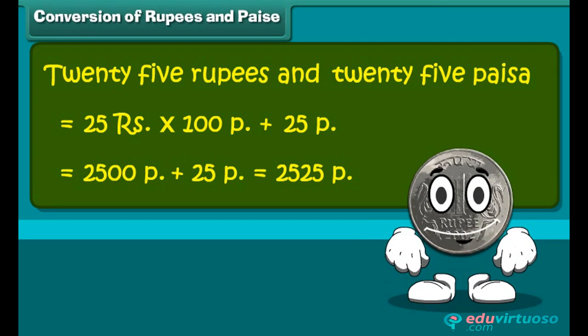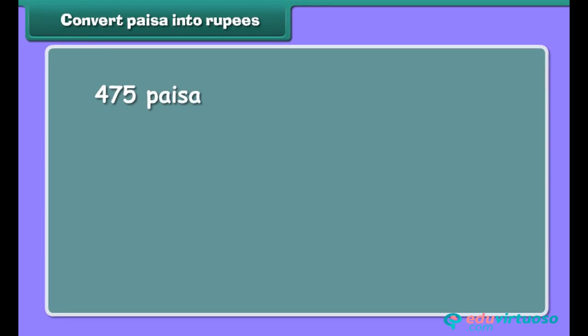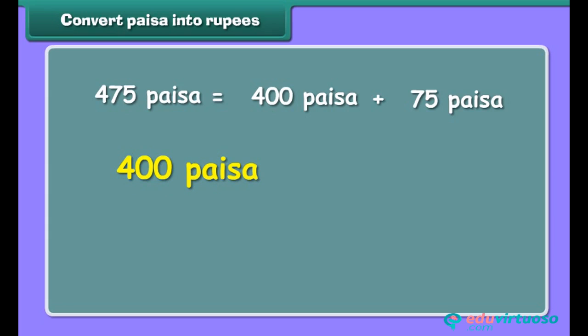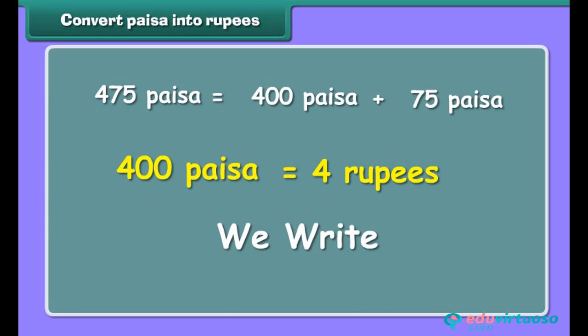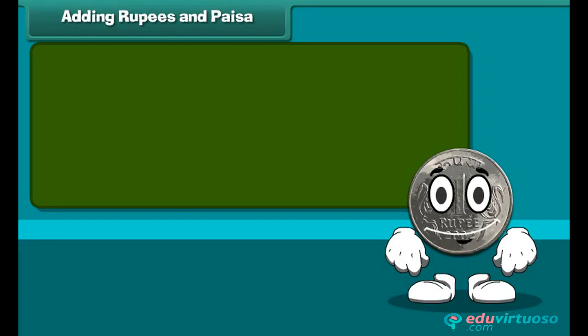It's time to convert paisa into rupees. 475 paisa is equal to 400 paisa plus 75 paisa. As we know, 400 paisa is equal to 4 rupees. Therefore, we can write it as 4 rupees and 75 paisa.